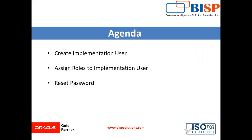The implementation user performs all implementation-related tasks in our application. For example, we can create the enterprise structure — under this we create the legal entity, business unit, and primary ledger. We also configure financial-related tasks like accounting calendar, charts of accounts, roles, and supply chain management related tasks. As per the offerings we have provided, we can perform and accomplish all the implementation-related tasks.